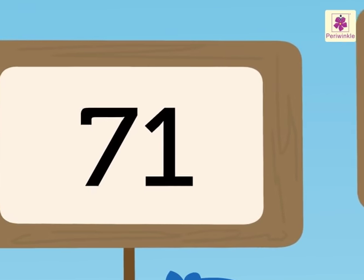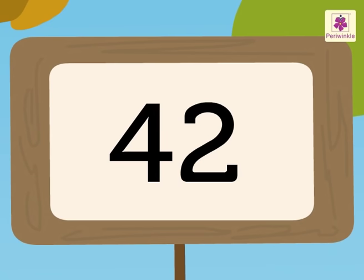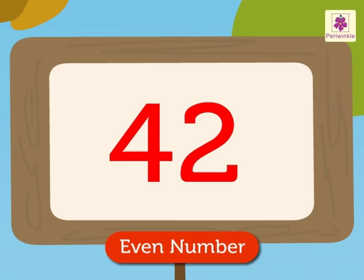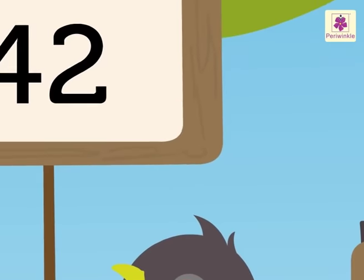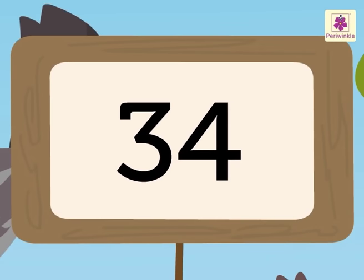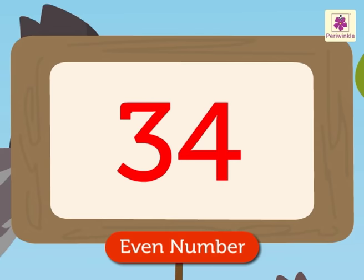Now we have the number 42. Here, 2 is in the ones place, so 42 is an even number. Next is 34. Here, the number 4 is in the ones place, so 34 is an even number.